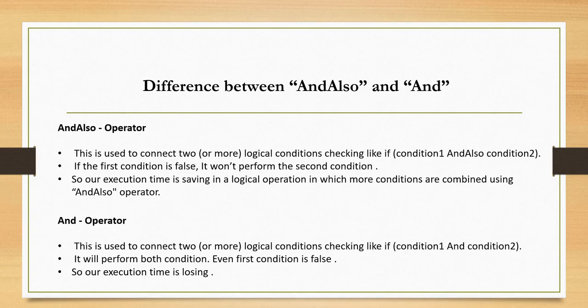AND ALSO is an operator. It is used to connect two or more logical conditions, like: if condition one AND ALSO condition two AND ALSO condition three — you can add more conditions. If the first condition is false, it will not perform the second condition. This is important because our execution time is saved in logical operations where more conditions are combined using the AND ALSO operator.